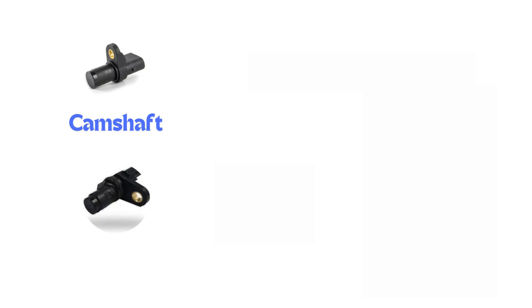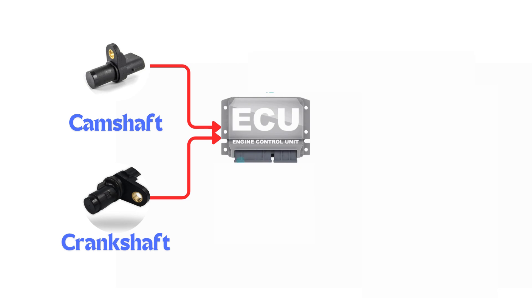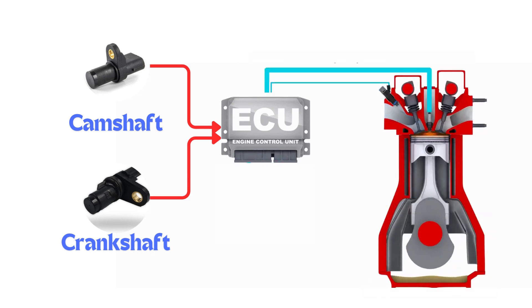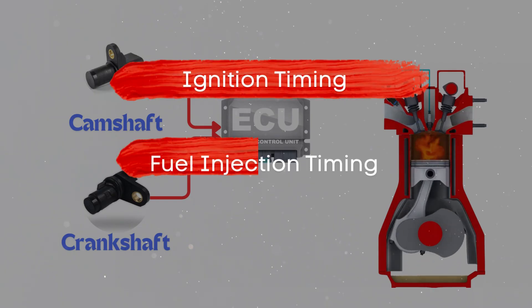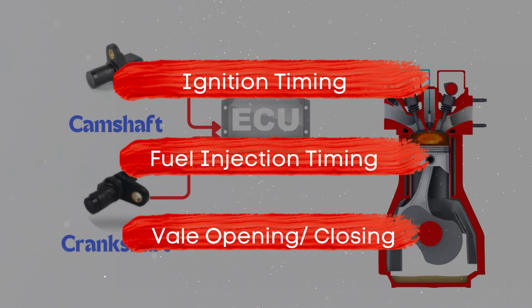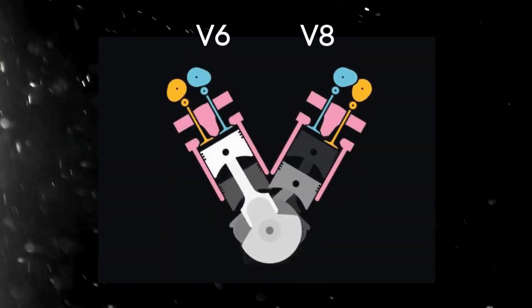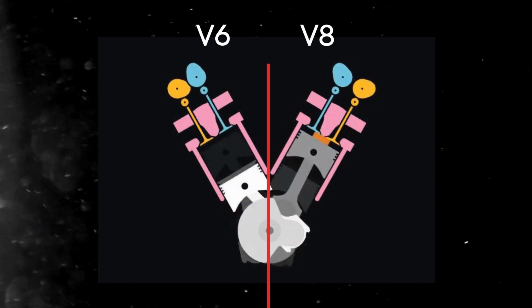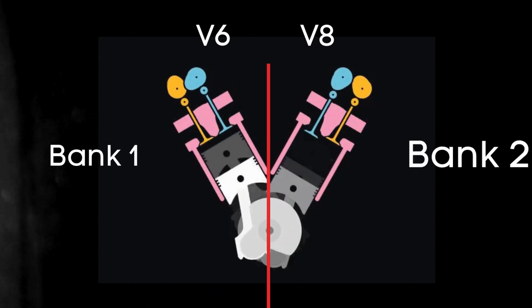The camshaft position sensor measures the position of the camshaft, while the crankshaft position sensor measures the position of the crankshaft. Both sensors send crucial data to the ECM, which uses this information to control ignition timing, fuel injection timing, and valve timing. In the case of V-6 or V-8 engines, there are two camshafts: bank 1 and bank 2.